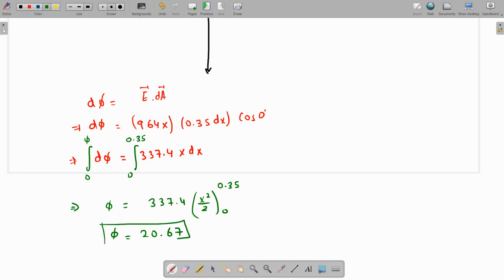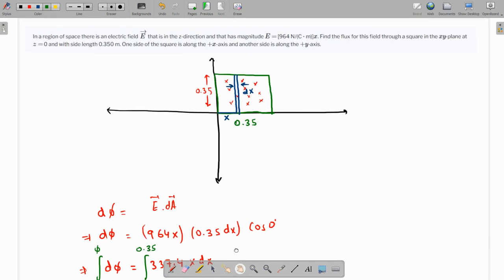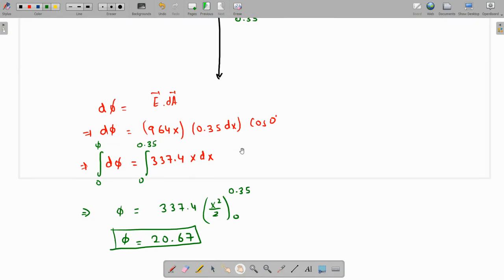So this is the required total flux through this particular square. Thank you.